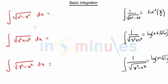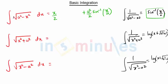Now whenever the root sign is in the numerator, this part will remain as it is. So we will have sine inverse of x by a plus something, because it is in the numerator. Here we multiply by a square by 2, and here we will have x by 2, and here we multiply by the same term root of a square minus x square. In this way you can remember this formula from the previous formula.